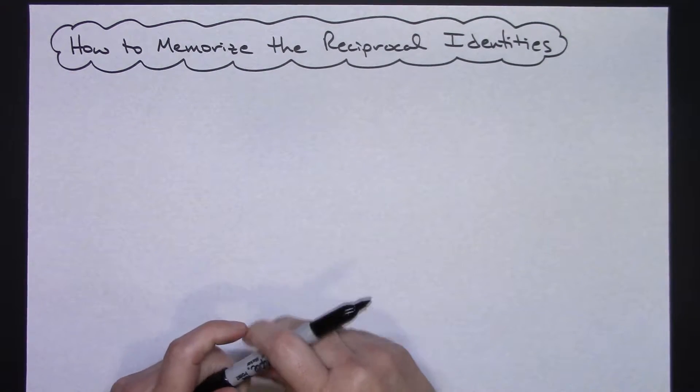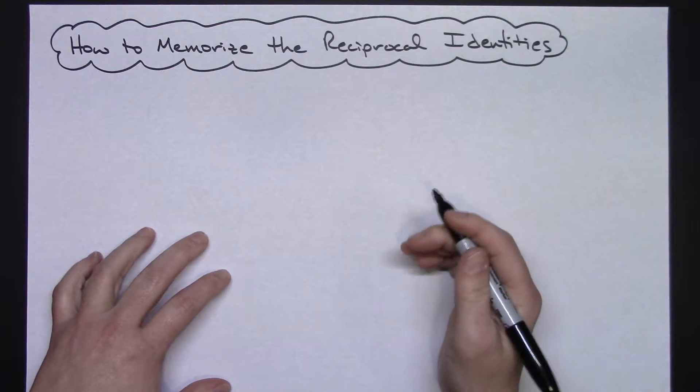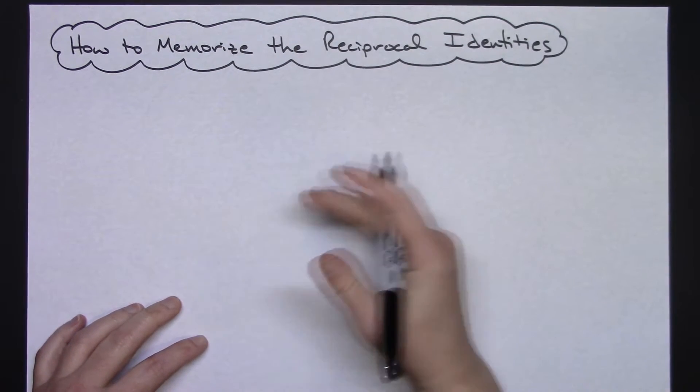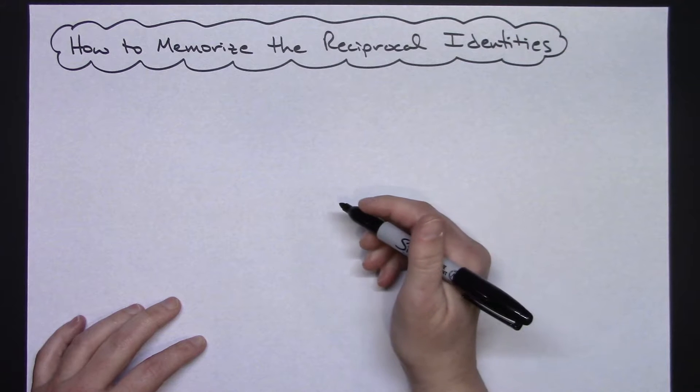Usually what I do is I tell my students that they could write all six of them relatively quickly in a nice little pattern at the top of their test before they start.